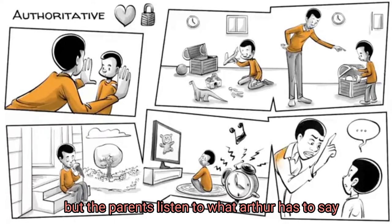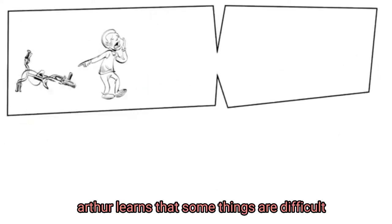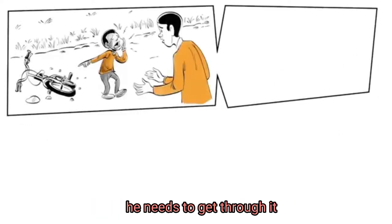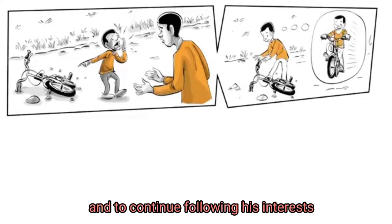There may be conflict, but the parents listen to what Arthur has to say and then lay down the rules. Arthur learns that some things are difficult, but his parents give him all the support he needs to get through it. He develops the strength to endure hardships and to continue following his interests and passions.